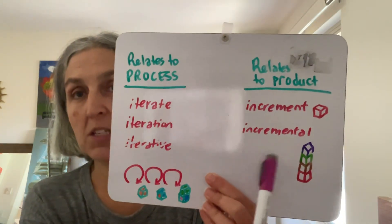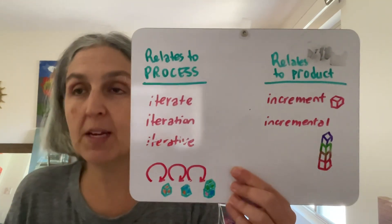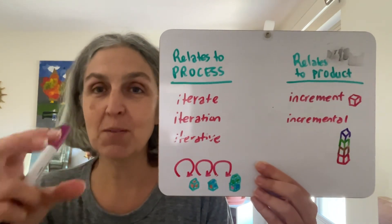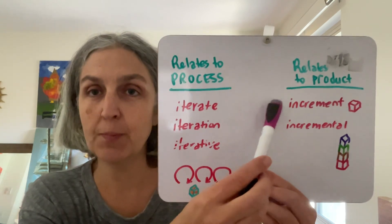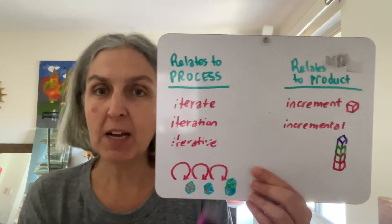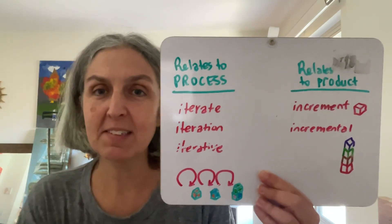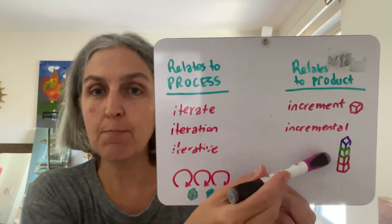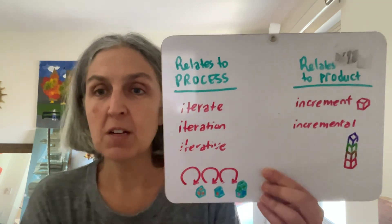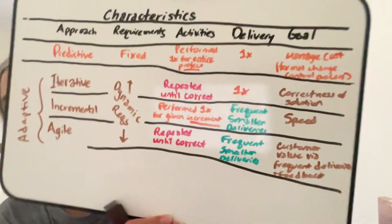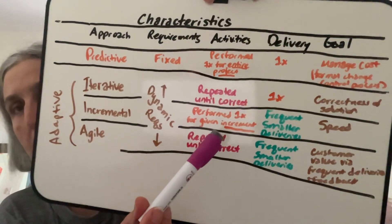Now, words that relate to the product itself: the word 'increment' — think of a product increment. This is a sub-chunk, a little deliverable, sometimes called a micro deliverable, but it's a fully functional sub-deliverable of what your ultimate deliverable is going to be. When we want to get things out fast, I build the first increment, then I build another increment on top of it, then another. We're not recreating — we're building on. In the chart, incremental means the activities are performed once per given increment.